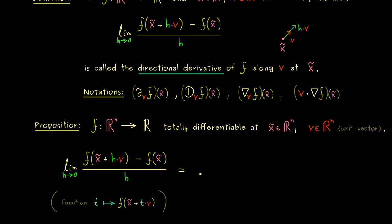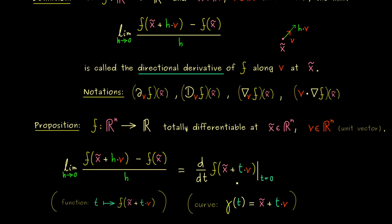Indeed, we can rewrite the directional derivative as an ordinary one-dimensional derivative. Consider the one-dimensional function where the variable t represents h, and ask for the derivative with respect to t, denoted d/dt, evaluated at t = 0. By the definition of the differential quotient, this equals the left-hand side. We can also write the inner part as a curve function gamma from R into R^n — its image is just a line in the domain, and importantly it is a differentiable function.